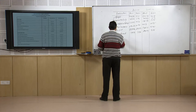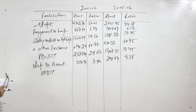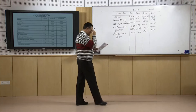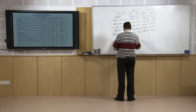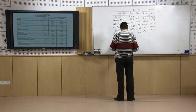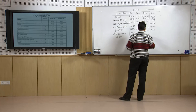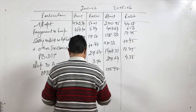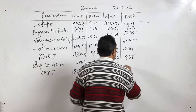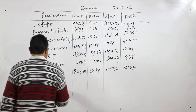We can now calculate OPBIT — operating profit before interest and tax. This works out as 2059.58 crores at 23.94 percent for the current year, and 1115.97 crores at 16.17 percent for the previous year. Now let us take the interest component.